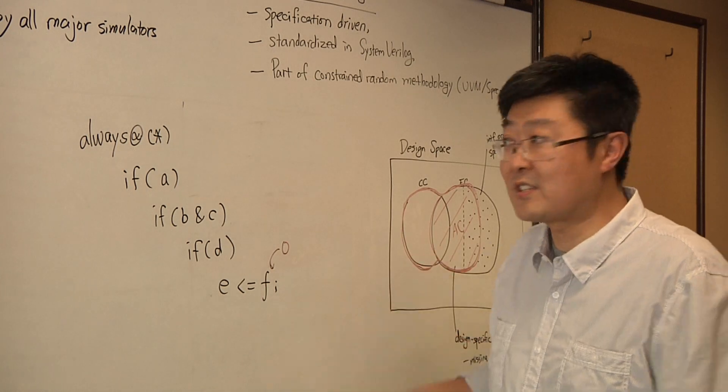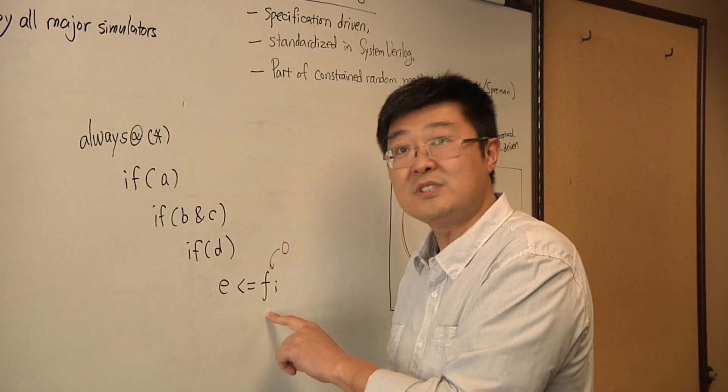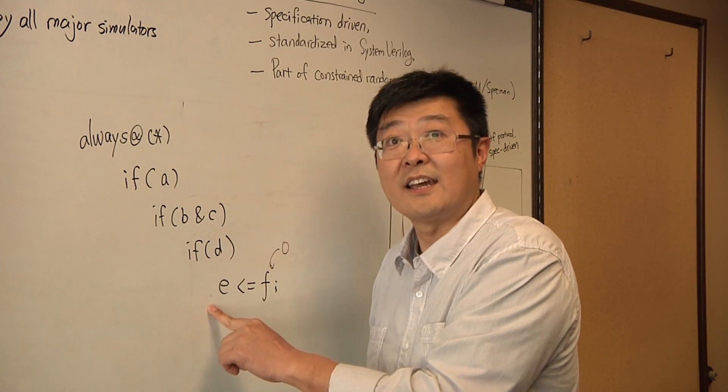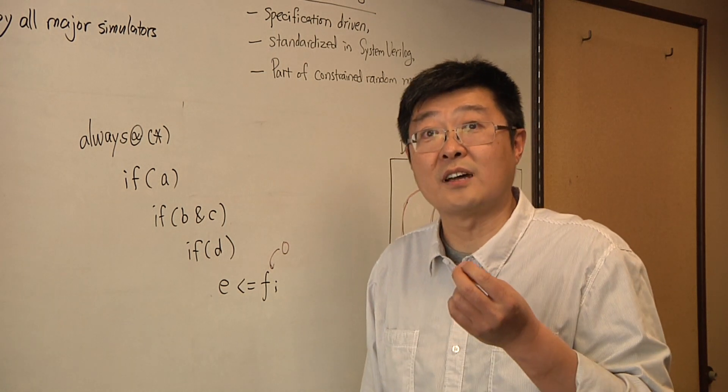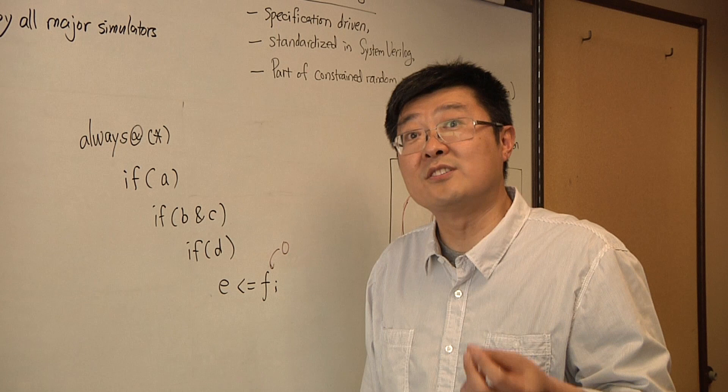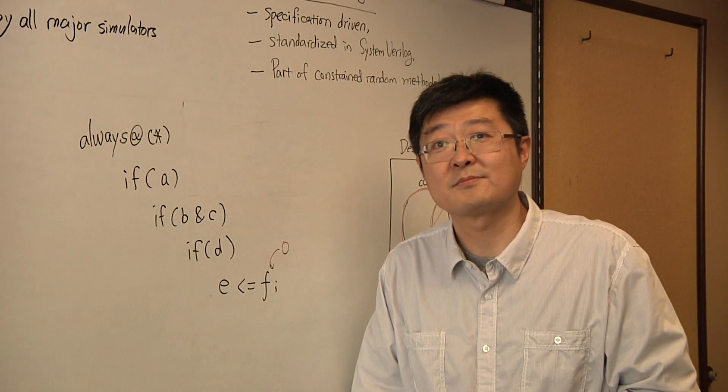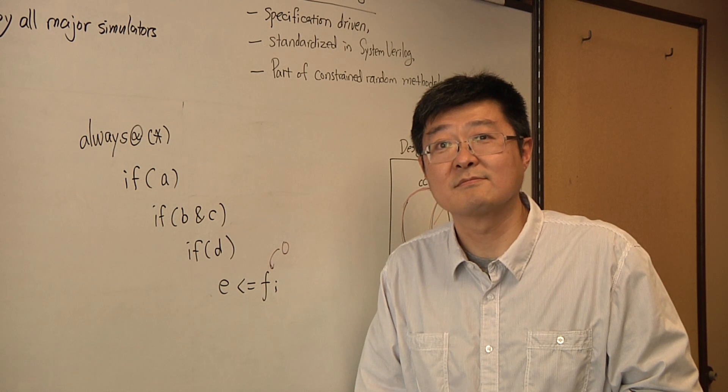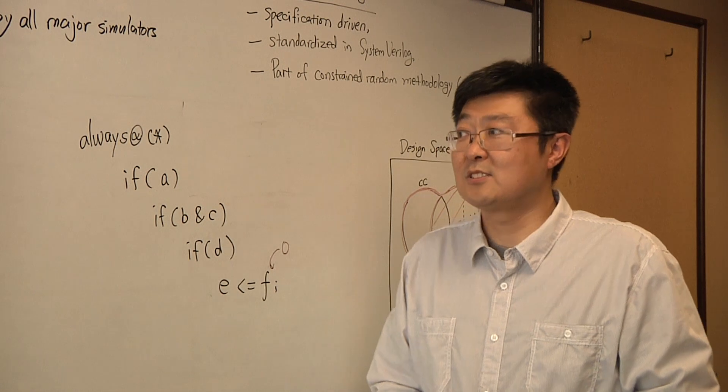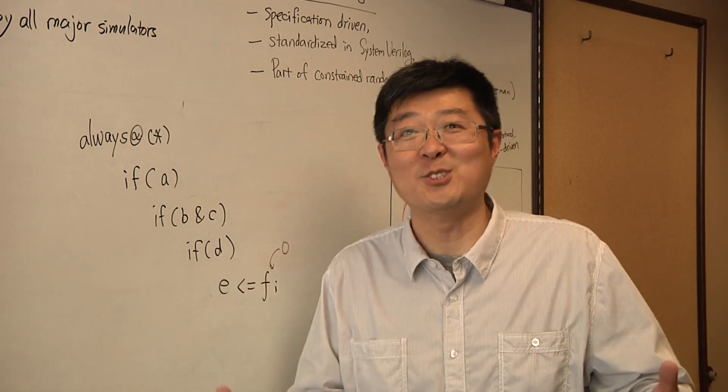With assertion synthesis, it can automatically look at RTL and realize that you need to assign different values to e when this condition has been validated. In that case, we found these late bugs near the tape out for customers. So to some extent, you're intellectually questioning what the tools do. And at the same time, you're questioning with tools what the people do.